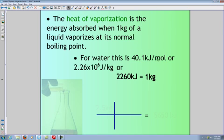For water, it's going to be 40.1 kilojoules per mole. We haven't talked that much about moles yet, but we'll do that in the next section. Or, in terms that we've done it so far, 2.26 times 10 to the sixth joules per kilogram. Or, we could put that in conversion factor form. We could turn this number here into kilojoules, and that gives us 2,260 kilojoules, and that is equal to one kilogram.